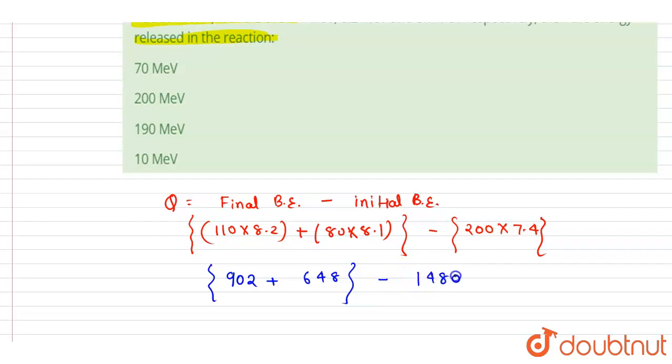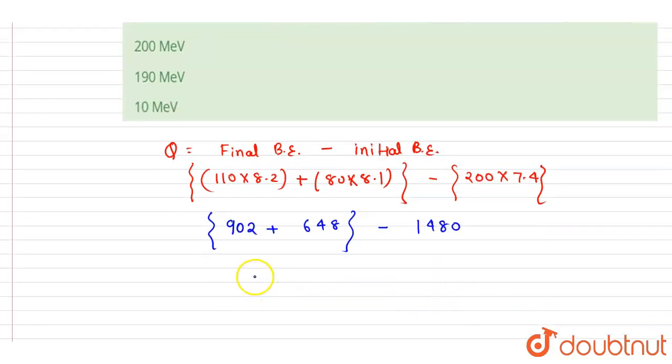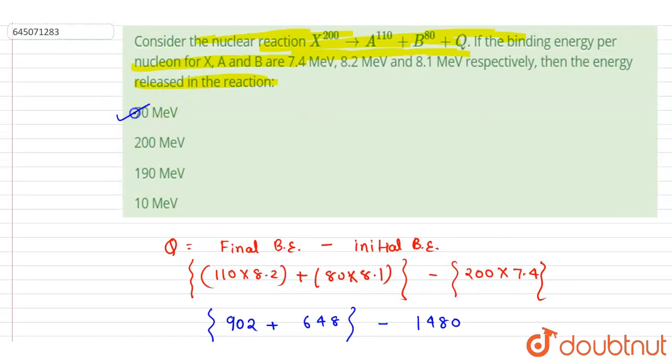It will be 1480. So if you see this, 902 and 648 is 1550, minus 1480 equals Q, and it will be equal to 70 MeV. And this is the answer of this question. Now you can check for the option, A is the correct option.